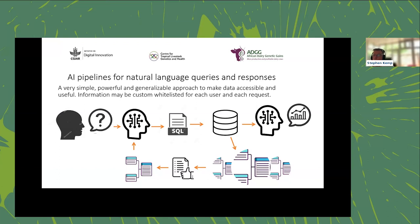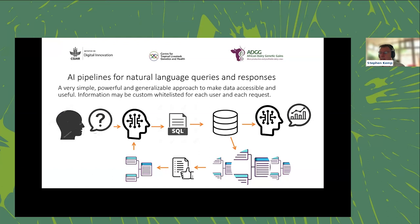One key feature is data privacy: we can whitelist data categories at a very granular level. Since the LLM only needs to know the natural language question and the database structure, if we want to hide a field we simply don't tell the model about it. If a user asks for confidential data like a telephone number, the system responds 'I don't know anything about telephone numbers' because that field was never in the whitelist.